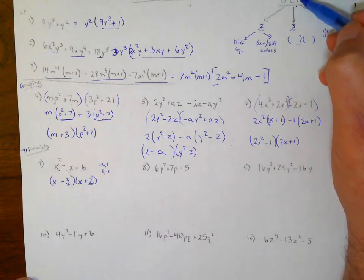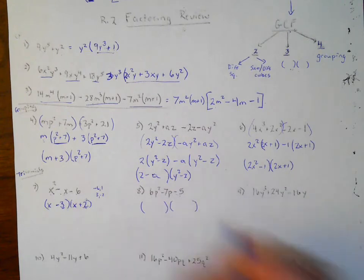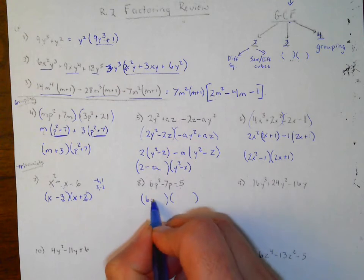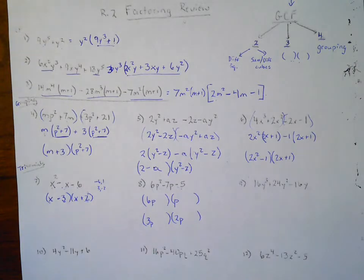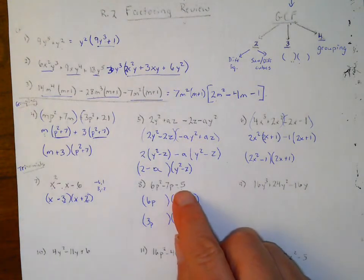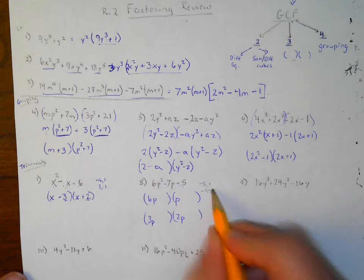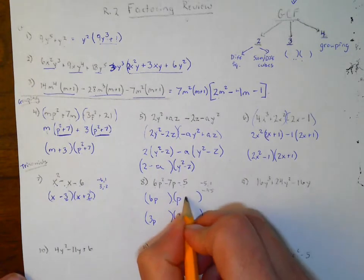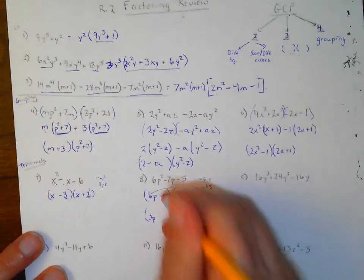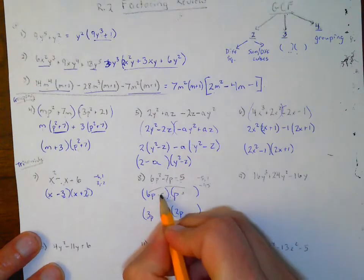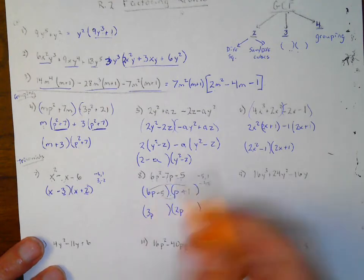For this trinomial 6p²−7p−5: first check for a GCF — none. Three terms, so set up two parentheses. For 6p², it might be 6p×p or 3p×2p. To get −5 at the end, it's either −5 and 1 or −1 and 5. Let's try 3p and 2p with +5 and −1: that gives 30p−1p, which is not −7. Switch around to 6p and p with +5 and −1: 6−5=1, still not −7. Let's try 3p and 2p with −1 and +5: gives −3 and +10. So 10−3=+7, but I need −7, so I'm close.